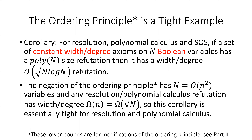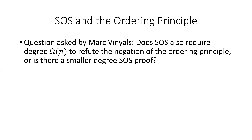A natural question is whether the size-degree bounds are tight or not. We have the following corollary for resolution, polynomial calculus, and sum of squares: if a set of constant width or degree axioms on n Boolean variables has a polynomial size refutation, then it has a refutation of width or degree O(√(n log n)). Now, the negation of the ordering principle has N = O(n²) variables, and any resolution or polynomial calculus refutation has width or degree omega(n), which is equal to omega(√N). So this corollary is essentially tight for resolution and polynomial calculus. A natural question, asked by Mark Vignels, is does sum of squares also require degree omega(n), or is there a smaller degree sum of squares proof?